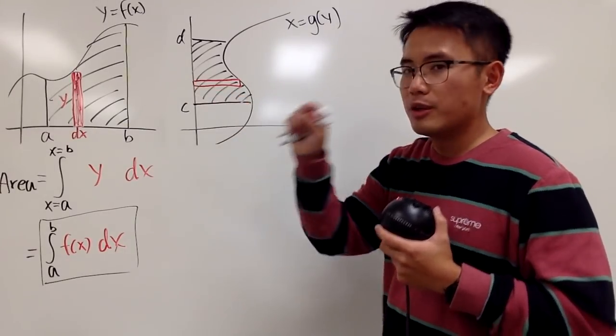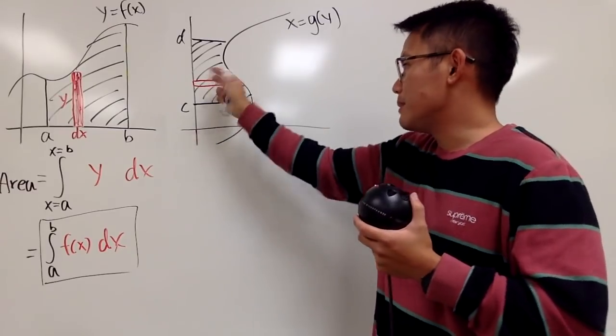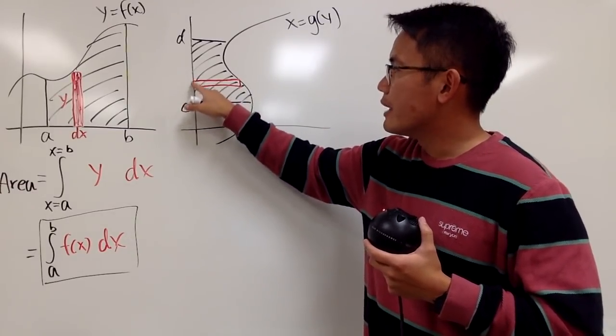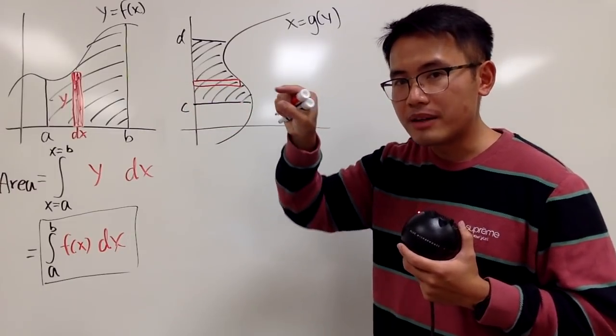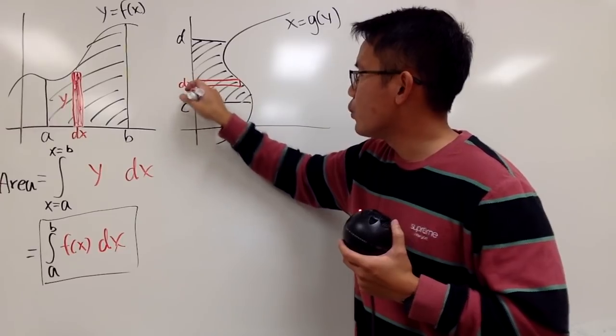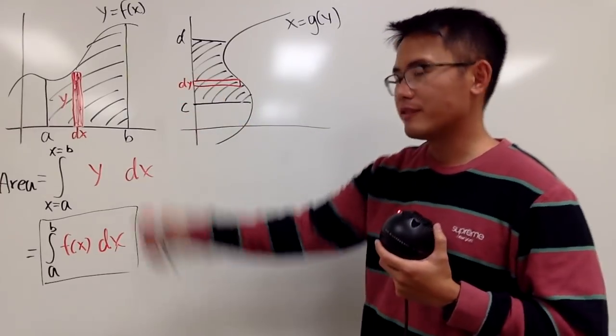This time, though, this is going to be my height, or maybe the base. Depends on how you look at it. But it doesn't really matter. You have to know that this is just a small change of amount in the y-axis. So I will label that dy. It's just the opposite of that, of course.